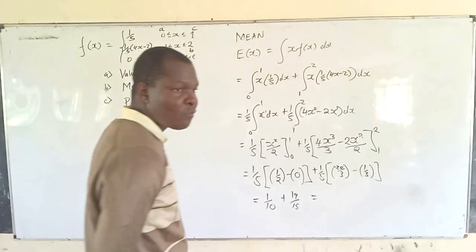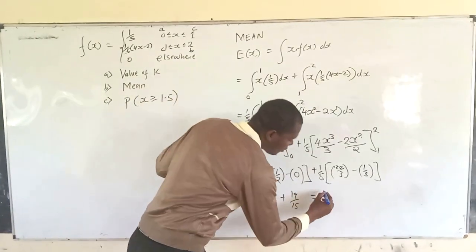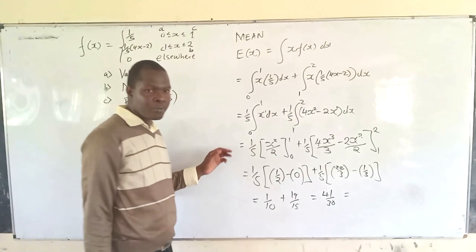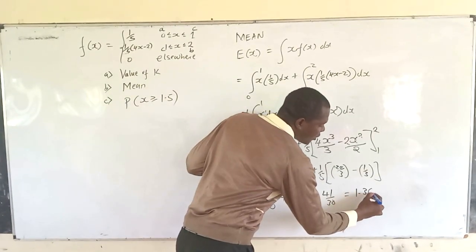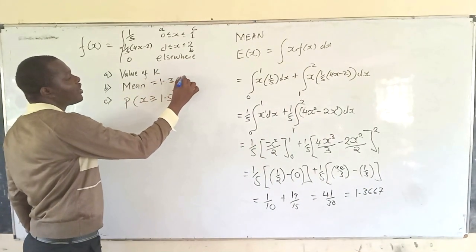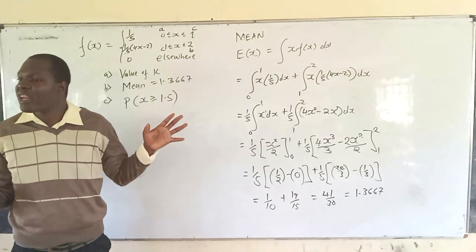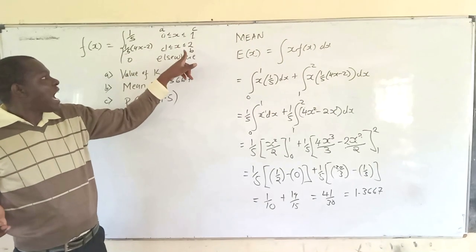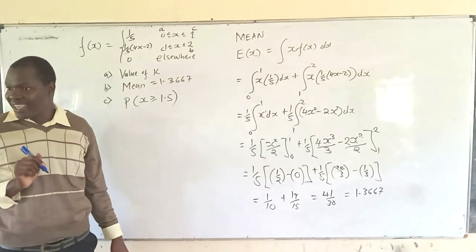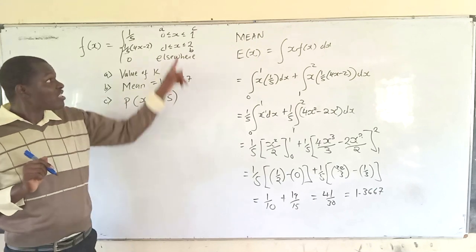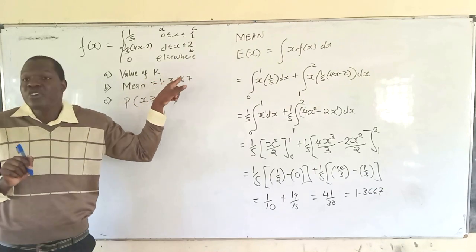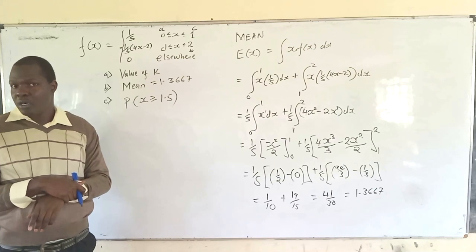The answer is approximately 1.366. We can verify this is reasonable: since x values range from 0 to 2, the mean must be between 0 and 2, and 1.366 is indeed within that range, so the answer is correct.